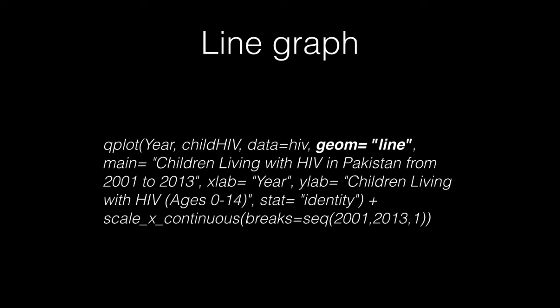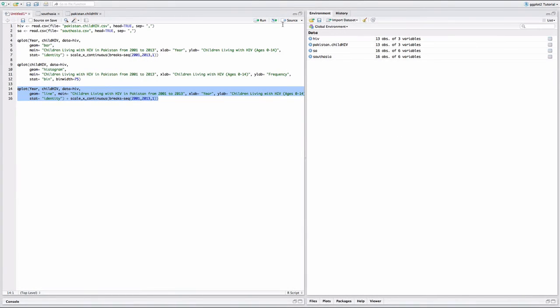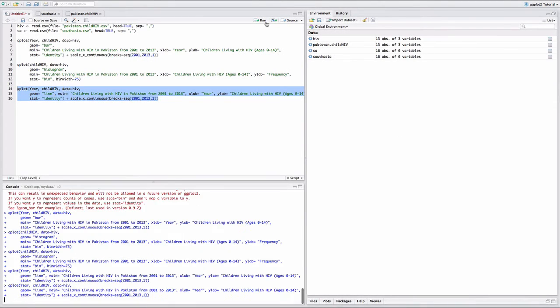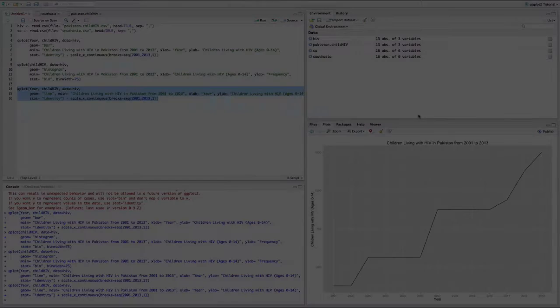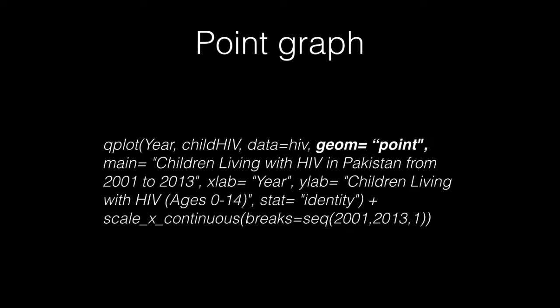To create a line graph, go back to stat identity and add back the additional x-scale breaks. Lastly, let's quickly create a point graph by changing the geom to point.